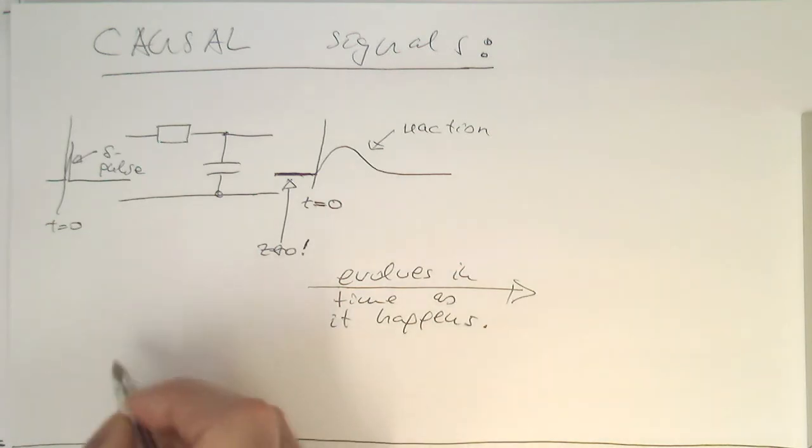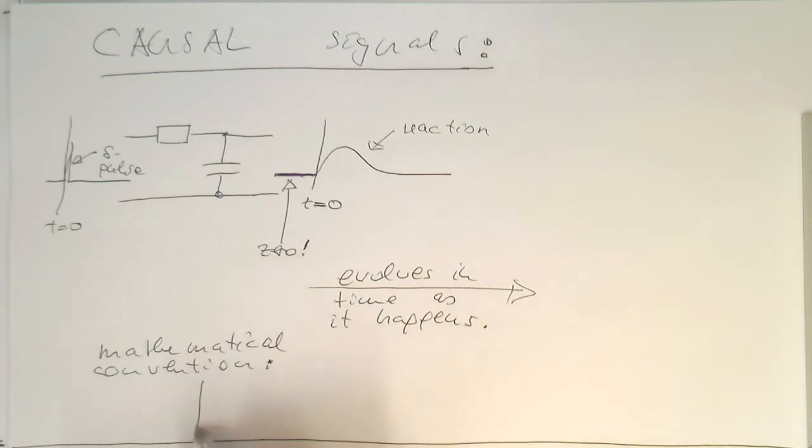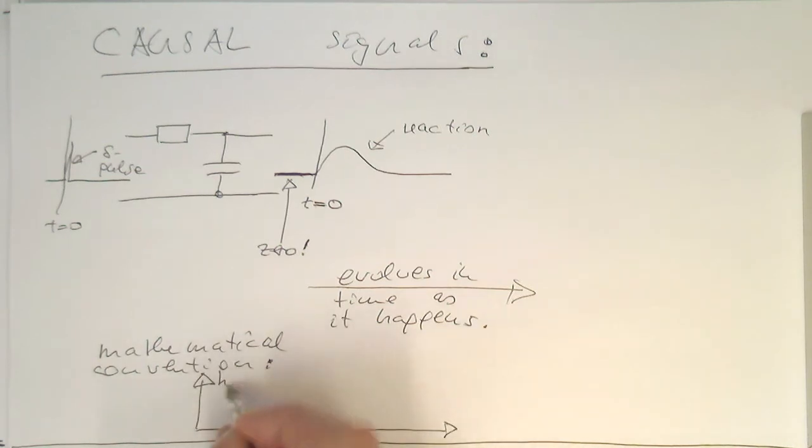So the mathematical convention to tackle this is that we say that if this is our signal here, and this is our function h of t, and this is here t, then the signal is always zero for negative time and only starts at zero.